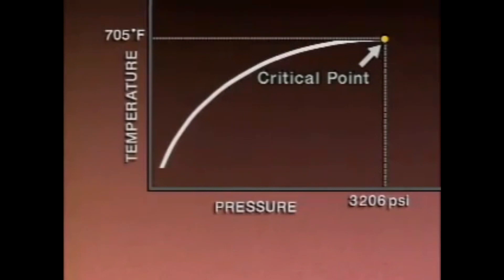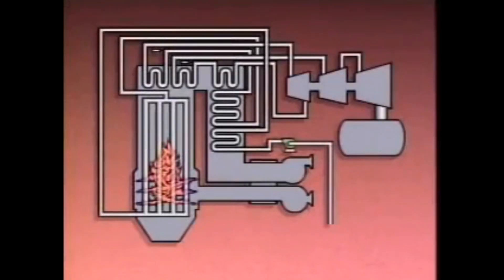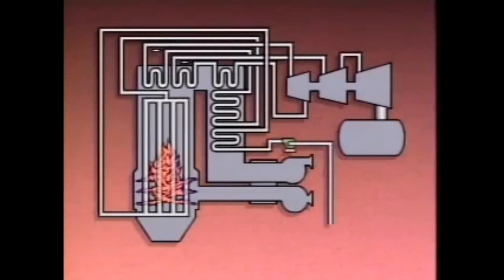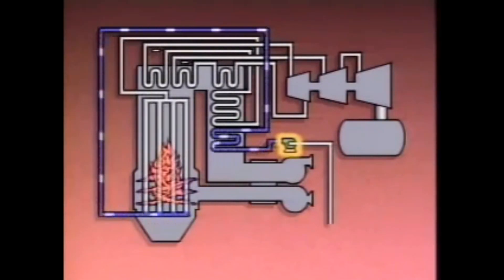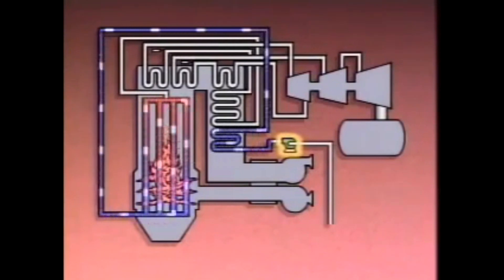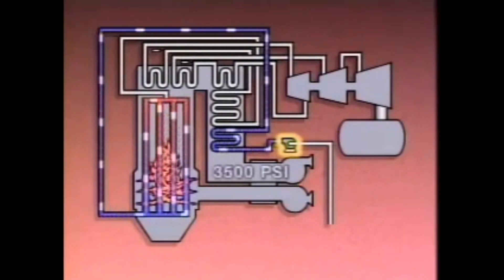A once-through boiler gets its name from the fact that water is pumped through it only once — it is not recirculated. Many once-through boilers are operated at supercritical conditions. In a typical supercritical once-through boiler, boiler feed pumps force the feed water through a header at the bottom of the furnace and up through the water walls. As the water flows through the water walls, its temperature increases. The water in the water walls is already under a very high pressure, typically around 3,500 PSI.